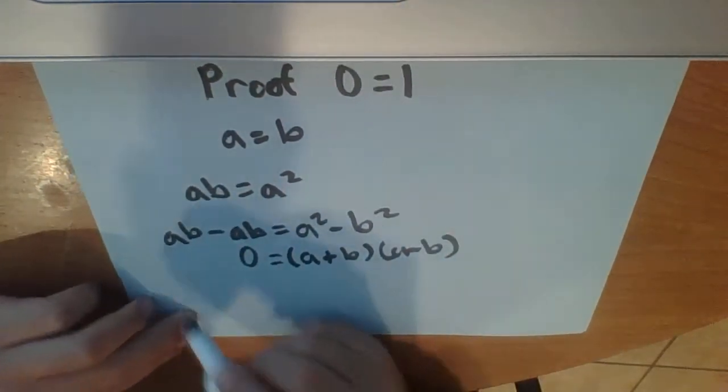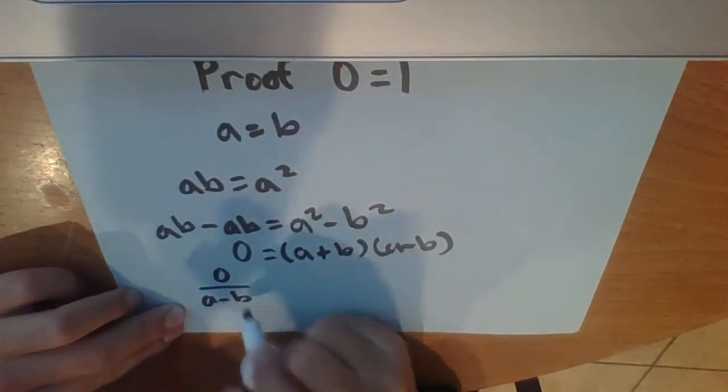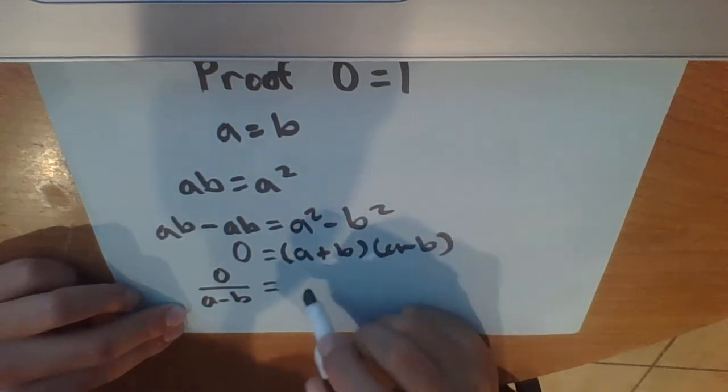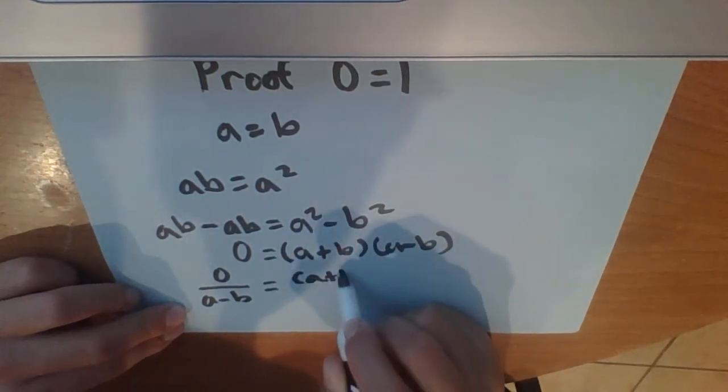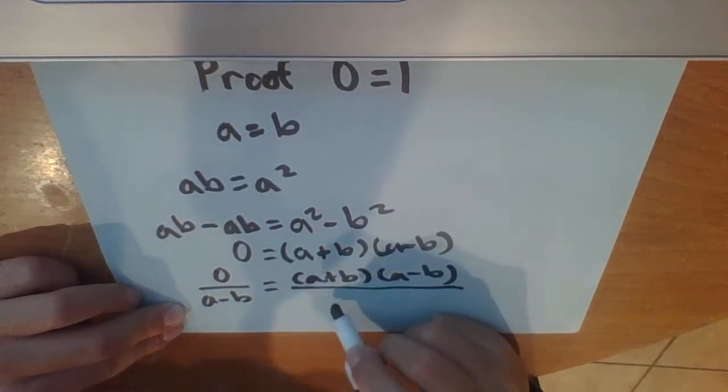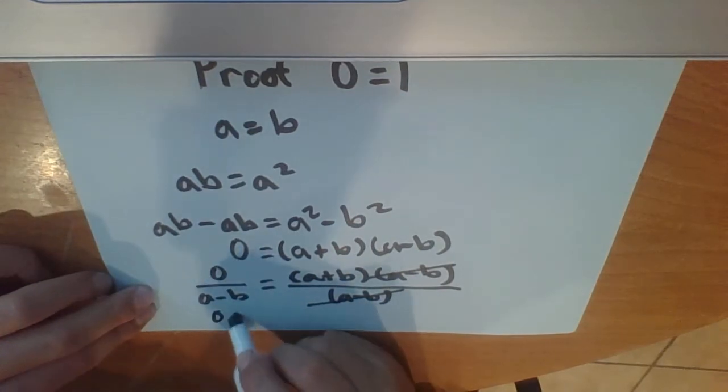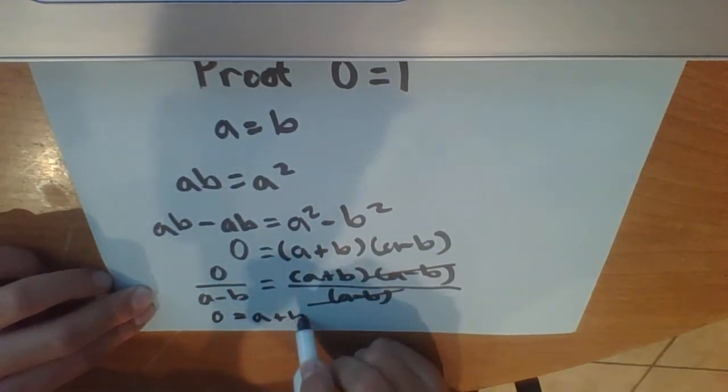So then next we can divide both sides by a minus b. That's perfectly allowed. So then a plus b times a minus b, we'll divide both sides by a minus b. Then these cancel out and you're left with 0 is equal to a plus b.